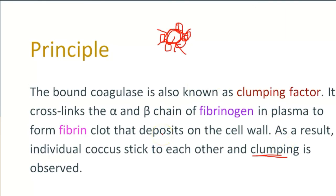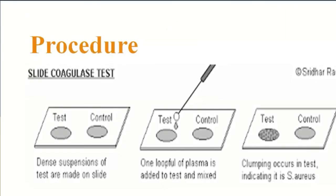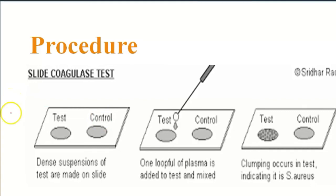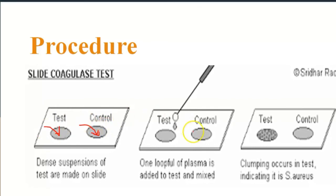For the procedure of the slide coagulase test: place a drop of saline on each end of a slide, or on two separate slides — one acts as the test and the other as the control. Using a loop, straight wire, or wooden stick, emulsify a portion of the isolated colony in each drop to make thick suspensions. Then add a drop of human or rabbit plasma to one of the suspensions and mix gently.